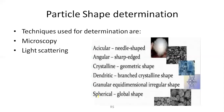The shapes include: acicular, which are needle-shaped particles; angular, which are sharp-edged crystals or particles; crystalline, which are geometric in nature; dendrites, which are branched crystalline shapes; and granular, equidimensional, irregular, spherical, and globular shapes.